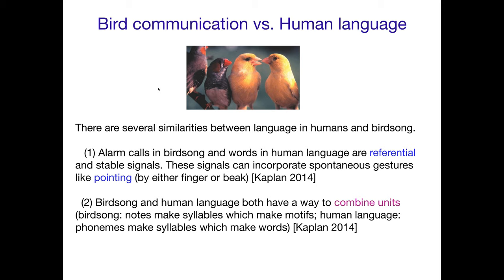It turns out that there are several similarities between human language and bird communication. Alarm calls in birdsong and words in human language are both referential and stable signals. They're not simply mere associations — they actually seem to mean or signal something to other birds. And they're stable: you use the same call or the same word to signal the same thing to someone who understands your birdsong dialect or your human language.